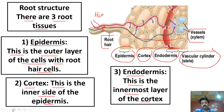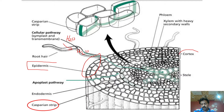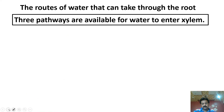پانی کو ان تینوں tissues کو cross کرنا ہوتا ہے۔ Radial transport کو simplify کریں تو: پانی اندر آئے گا root hair cell سے، پھر cross کرے گا epidermis کو، پھر cortex کو، پھر endodermis کو — پانی ہمیشہ move کرتا ہے from higher water potential to lower water potential جس کو osmosis کہتے ہیں — اور finally stelar region کے xylem میں چلا جائے گا۔ اس کو کہتے ہیں radial transport۔